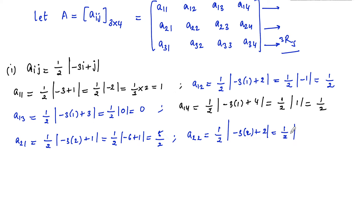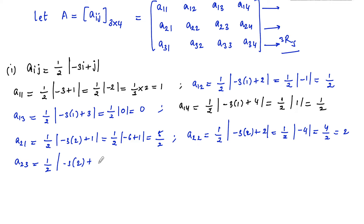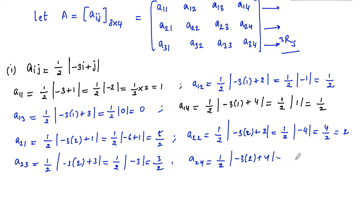A22 = (1/2)|−6 + 2| = (1/2)|−4| = 4/2 = 2. Next, A23 = (1/2)|−3×2 + 3| = (1/2)|−6 + 3| = (1/2)|−3| = 3/2. And A24 = (1/2)|−3×2 + 4| = (1/2)|−6 + 4| = (1/2)|−2| = 2/2 = 1.